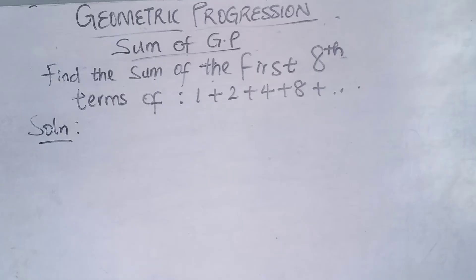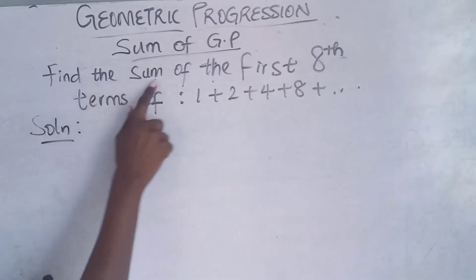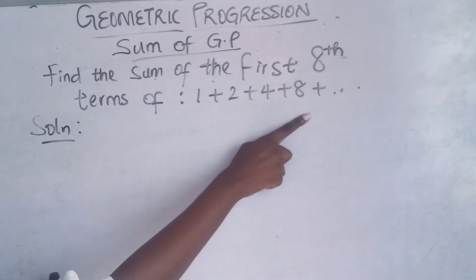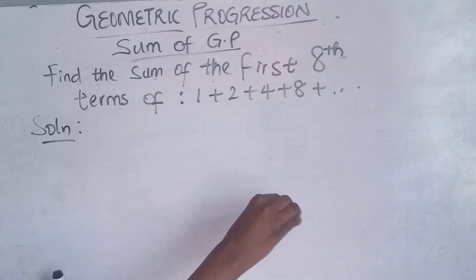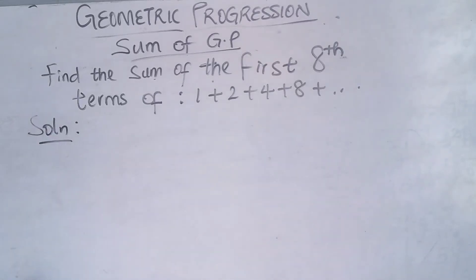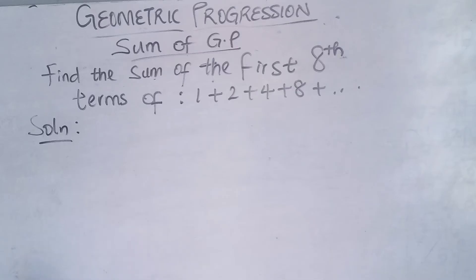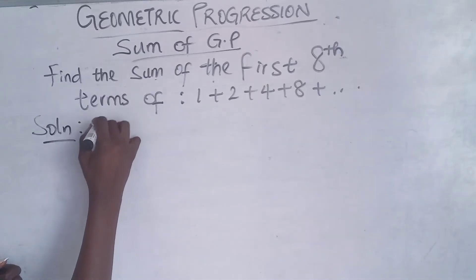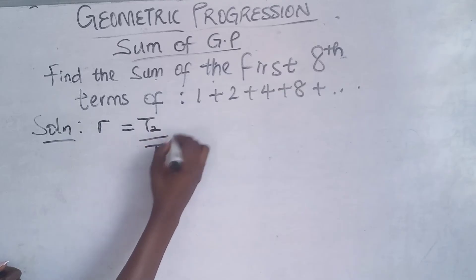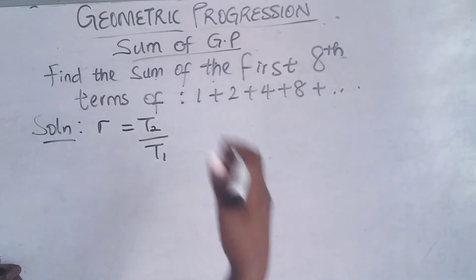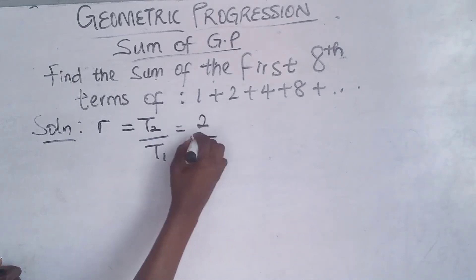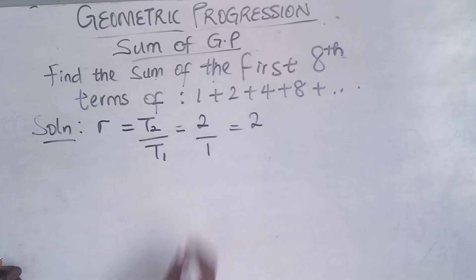Given a question like this, having learned the formula for the sum of a geometric progression, we are asked to find the sum of the first 8 terms of this series. Note: it is a series because there is a '+' sign between terms; if there were commas, it would be a sequence. First, we need to find r to know which formula to use. r = T2/T1 = 2/1 = 2.